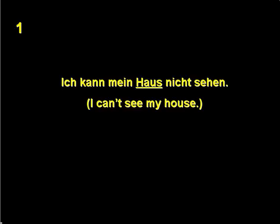So let's take an example here. 'Ich kann mein Haus nicht sehen.' I can't see my house. In this particular case, the word 'Haus' would be accusative because it is the direct object of the sentence. Remember, the direct object is normally what is receiving the action of the verb. In this case, what cannot be seen is the house.